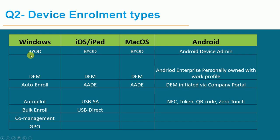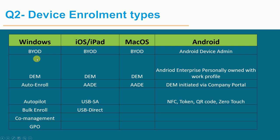Device enrollment types — what are the device enrollment types for Windows? We can use BYOD, DEM method, auto enrollment, Autopilot, bulk enroll, co-managed, and GPU. All these methods are used to enroll Windows devices.